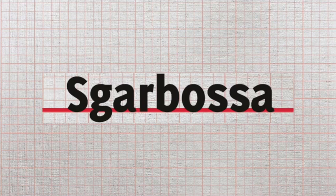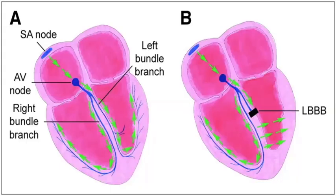Before we get into how to do that, we need to understand how the left bundle branch block works. On the left is the normal electrical conduction pathway. You have your SA node that sends a signal down through the internodal pathways to your AV node. It gets held up at your bundle of His, then released down the bundle branches — left and right — through to the Purkinje fibers, stimulating contraction through the cardiac myocytes. That's your general normal electrical conduction pathway.